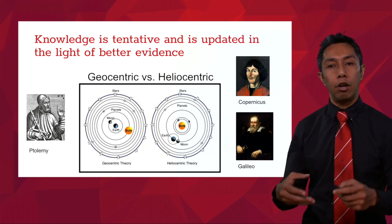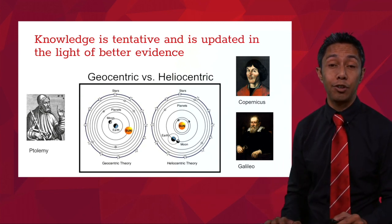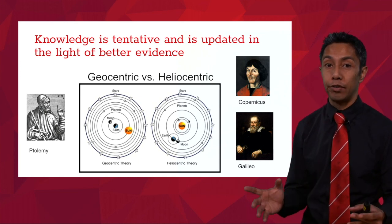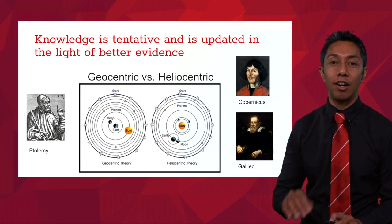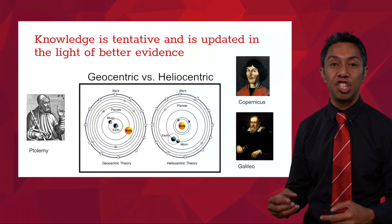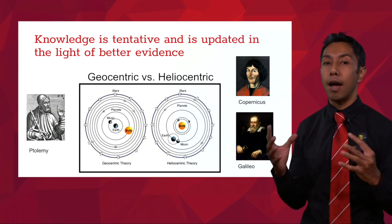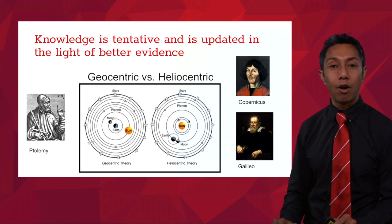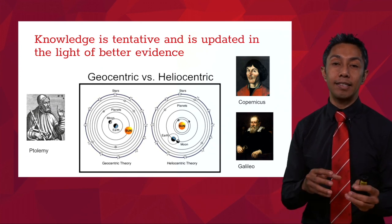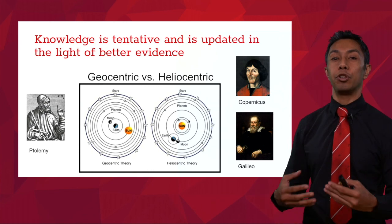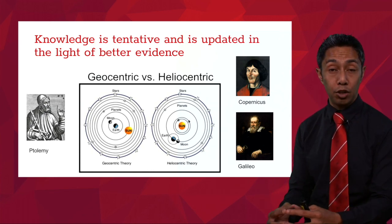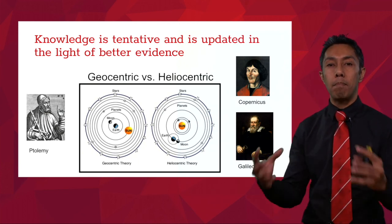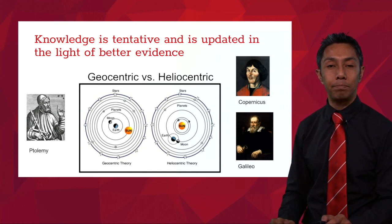Another great example of how knowledge has been updated over time is our understanding of the universe. We as humans used to believe that the Earth was the centre of the whole universe. That was put down on paper by Claudius Ptolemy, who came up with the geocentric model — the Earth is the centre of the entire universe. However, through the work of Copernicus, Galileo and Kepler, that understanding was eventually updated to place the sun at the centre. We currently know that our sun is really just the centre of our solar system and is part of a much bigger universe.